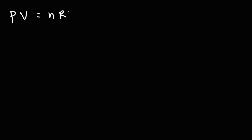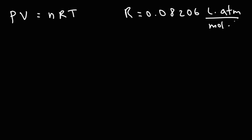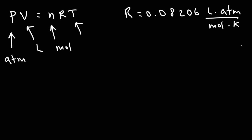The first formula we're going to talk about is the ideal gas law: PV is equal to nRT. In this equation, R is the gas constant, which is 0.08206, with units of liters times atm per mole per Kelvin. The units of R tell you the units you need to use: pressure in atm, volume in liters, n is number of moles, and T is temperature in Kelvin.